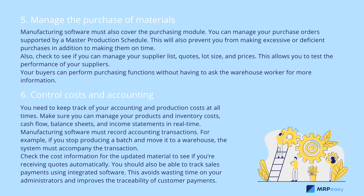Five: manage the purchase of materials. Manufacturing software must also cover the purchasing module. You can manage your purchase orders supported by a master production schedule. This will prevent you from making excessive or deficient purchases, in addition to making them on time. Check to see if you can manage your supplier list, quotes, lot size, and prices — this allows you to test the performance of your suppliers. Your buyers can perform purchasing functions without having to ask the warehouse worker for more information.